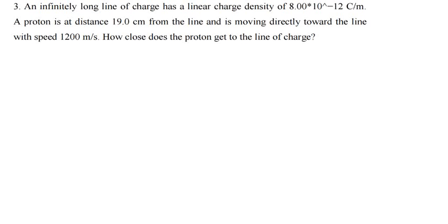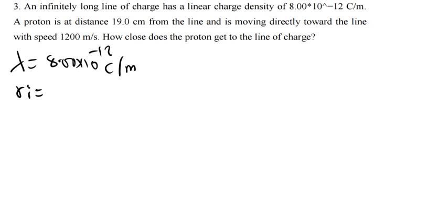Let's first come up with the data. We have been told the linear charge density, represented by lambda, is 8.00 times 10 raised to the power negative 12 coulombs per meter. We have also been told that the proton is at a distance of 19 centimeters — that is our initial distance. We need to find the final distance, which is what the question is asking.